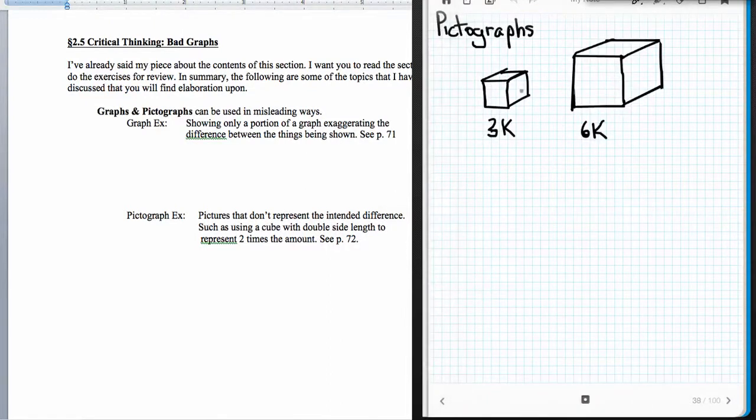And another thing that I'd like to remind you about was what I said about pictographs. So here's a picture where we have a cube representing 3k, and here's a cube representing double that, 6k. And if you look at these, does this cube out here on the right look like twice what this one represents? No, it doesn't, right?